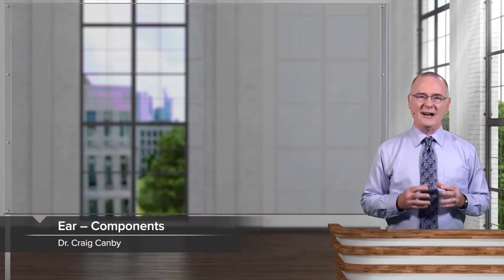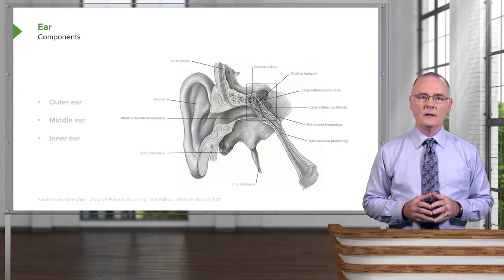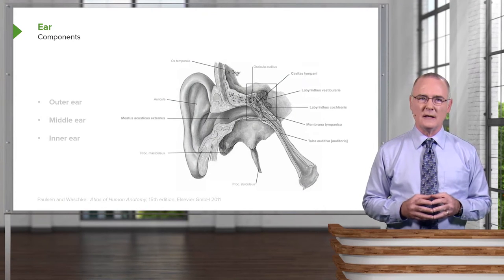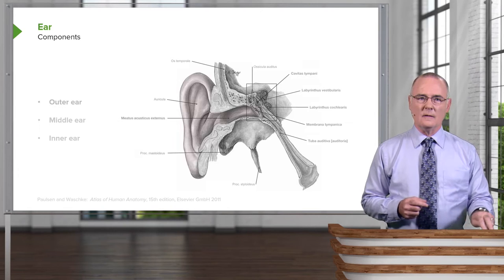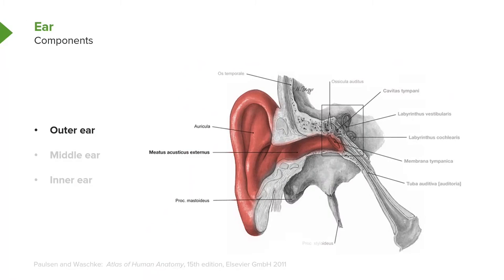Welcome to this presentation on the auditory system. I want you to understand the basic components of the ear. We'll begin with the outer ear. Everything shaded is a part of the outer ear, so the most prominent structure is external, and that is the auricle. That will collect sound waves and then funnel those sound waves into the external acoustic meatus.